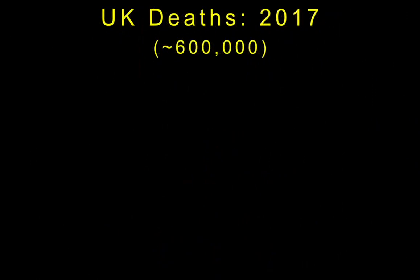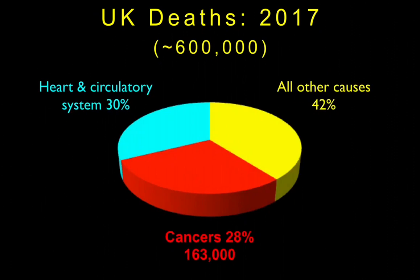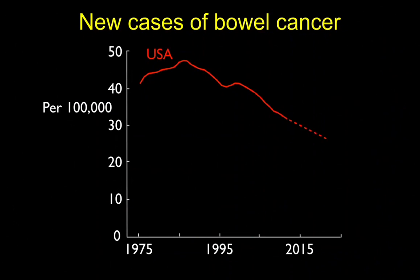If we consider the developed countries and ask what proportion of deaths are attributable to cancers, the UK reflects this well. Roughly speaking, about a third of all deaths are due to cancers collectively, and about another third arise from heart and circulatory problems. The red line shows the shift in bowel cancer incidence in the USA over the last 45 years. Since the 1970s, the high level has steadily declined, perhaps due to publicity over the link with bowel cancer, whilst poultry consumption has gradually increased.